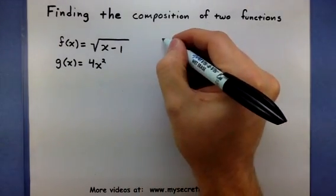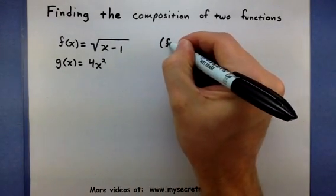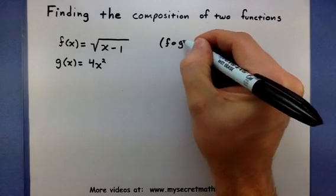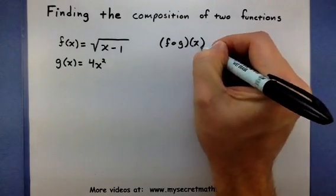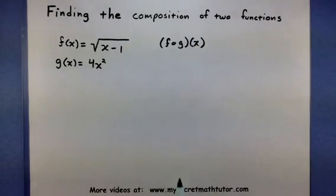Now, basically the notation that's used for this looks something like this: f circle g x. And the way you read this is f of g of x. And it basically means to take one function and put it inside of the other one.